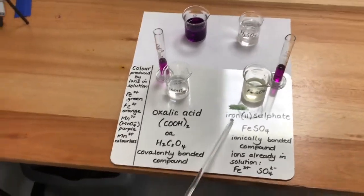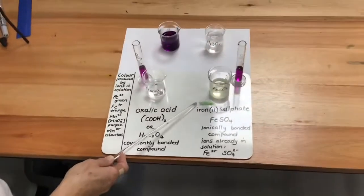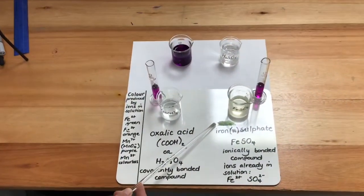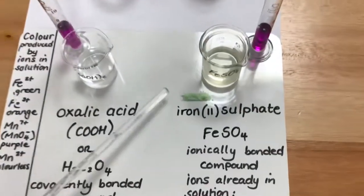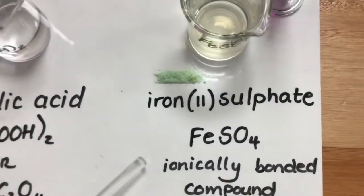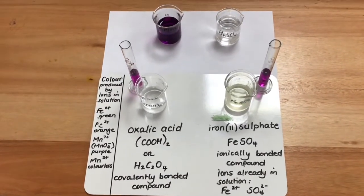Here, I have a solution of iron(II) sulfate. I just wanted to show you the green color of iron(II) sulfate. This is an ionically bonded compound, and when it goes into solution, it forms the ions Fe²⁺ and SO₄²⁻.